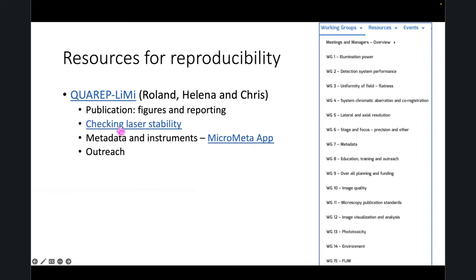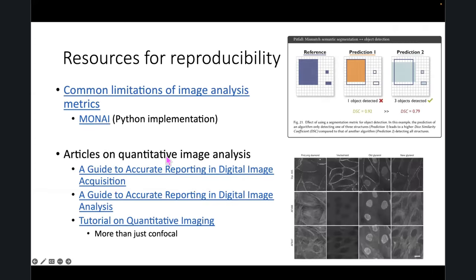Quality control and validation — the metric you use is very important. They have great examples about why you don't want to use certain metrics for certain things. For instance, with three objects where one is much larger than the others, if you use a similarity coefficient, one algorithm can look like better segmentation even though the other one actually picks up all three objects. Certain types of validation procedures are going to work better for certain types of analyses.